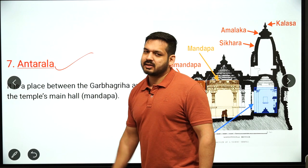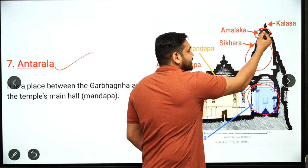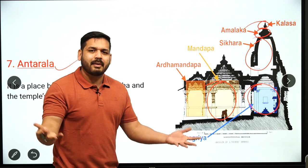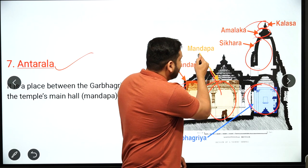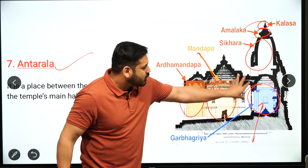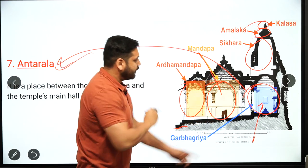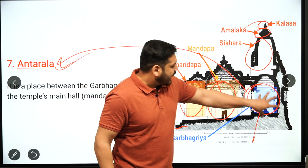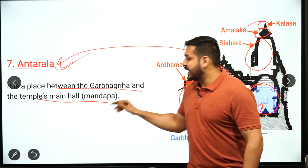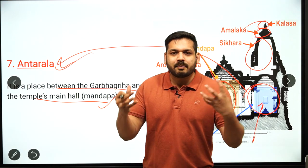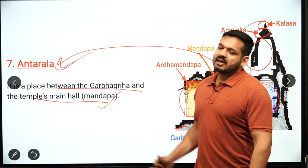The seventh feature is Antral — the space between the Garbhagriha and the main hall (Mandap) of the temple. It is essentially a vestibule or connecting passage between the sanctum where the deity resides and the Mandap where worshippers stand. When you visit a temple, the space you pass through between the prayer hall and the inner shrine is known as Antral.